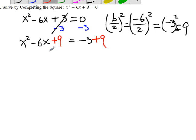Now, on the left-hand side, you may see a perfect square. If you factor it, it will end up with x minus 3 squared. Now, simplify negative 3 plus 9, which gives us 6.